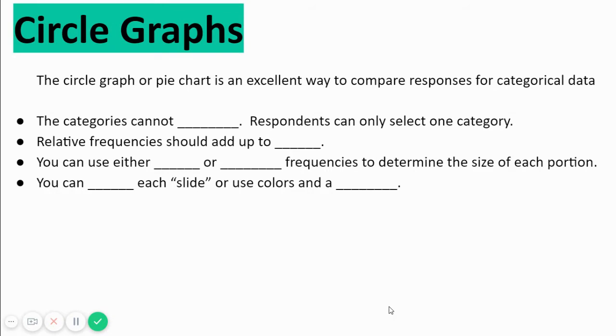Pie charts you've seen since you were at least in middle school, maybe earlier. Sometimes circle graphs can be an excellent representation of data. There are some important ideas to keep in mind. They cannot overlap. Everyone must choose exactly one category. The relative frequencies have to add up to a hundred percent. You can either use actual, by actual they mean counts, or relative, they mean percentage or rates to determine the size of each fraction in the circle. You may either label the slides or use colors and a legend.